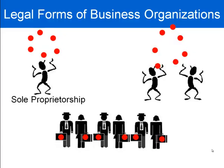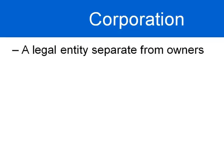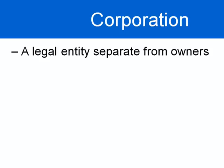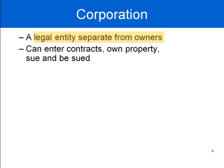There are three legal forms of business organizations: sole proprietorship, partnership, and corporation. This video is about the corporation. A corporation is a legal entity that is separate from its owners. This legal entity can enter contracts, it can own property, and it can sue and be sued. This idea of a separate legal entity from the owners is critical to the concept of a corporation.